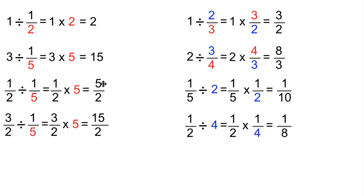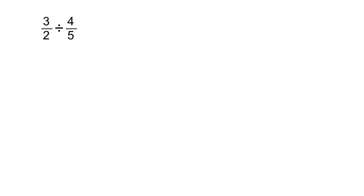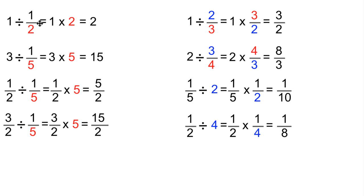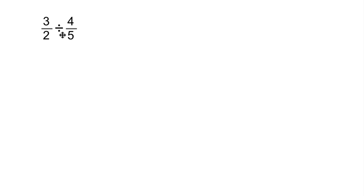Ask your students to see if they can use that connection to answer this question: three halves divided by four fifths. Whenever we divided by a unit fraction, that was the same as multiplying by the denominator of that unit fraction. Whenever we divided by a whole number, it was the same as multiplying by a fraction with that whole number as the denominator. And when we divided by a non-unit fraction, it was the same as multiplying by a fraction that had the numerator and denominator inverted. So for three halves divided by four fifths, we expect that to be rewritten as three halves times five fourths. When you multiply fractions you multiply across, so this becomes fifteen eighths.